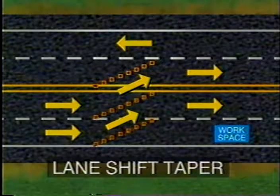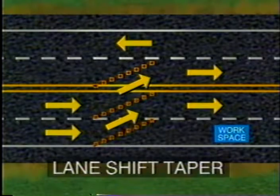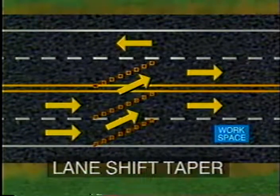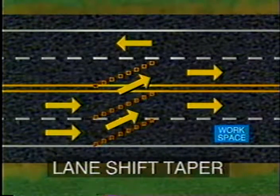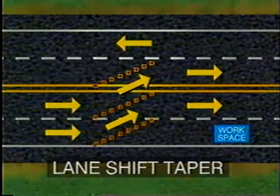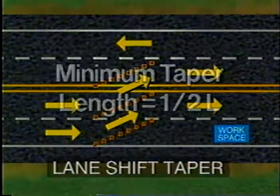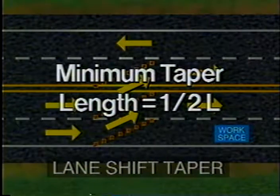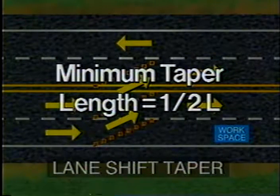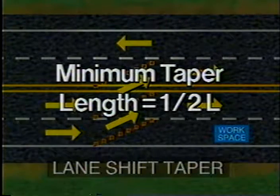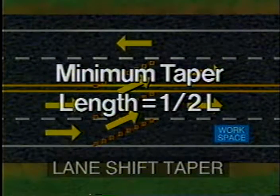The lane shift taper is used when traffic is only being shifted and no merge is required. Therefore, the taper does not have to be as long as a merging taper. The minimum taper length is one half L, where L is the computed length of a merging taper for the given posted speed and width of the lane shift.